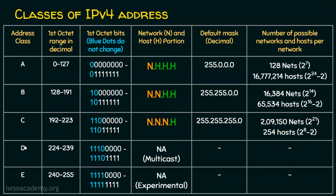Class A, B, C, D, and E. Each class has its own first octet range and each class has its own subnet mask. Class A has a default mask of 255.0.0.0, class B has 255.255.0.0, and class C has 255.255.255.0. Each class also has a number of possible networks and hosts per network.